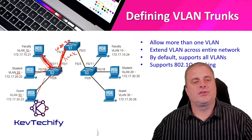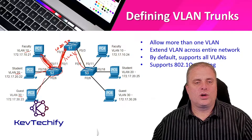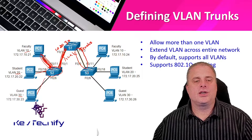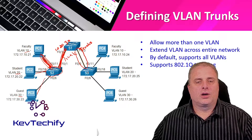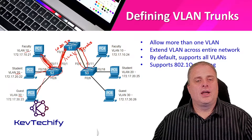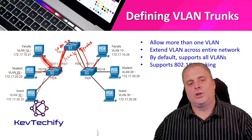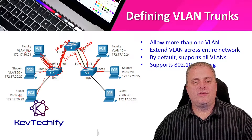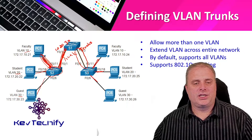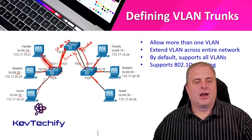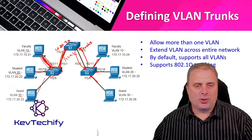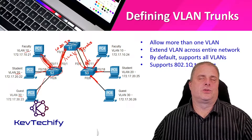All VLANs transfer across that trunk. The same applies to the connection between Switch 1 and Switch 3 — it's also a trunk handling all three VLANs. The switch receives the traffic and, according to its configuration, sends only VLAN 10 information to PC4, only VLAN 20 to PC5, and only VLAN 30 to PC6. Those are access ports sending out one VLAN worth of information, while the trunk port sends out all VLANs.